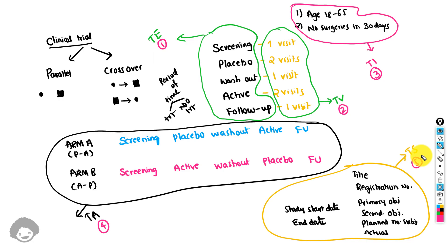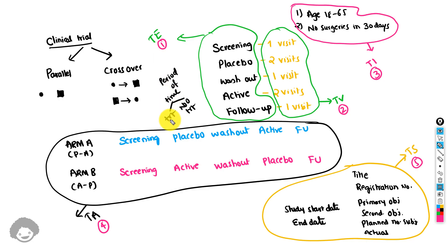The trial elements dataset stores all the elements possible in the study. An element is a period of time in which the subject may be taking treatment or no treatment. Within a treatment period, the element is given a specific name based on the treatment received. If a subject is receiving placebo, that element is called the placebo element; if receiving active treatment, it is called the active element.